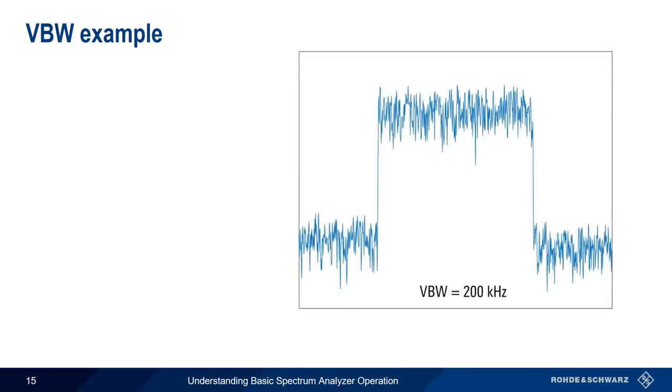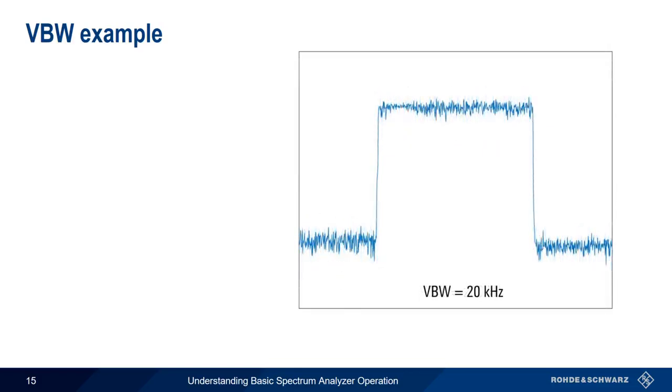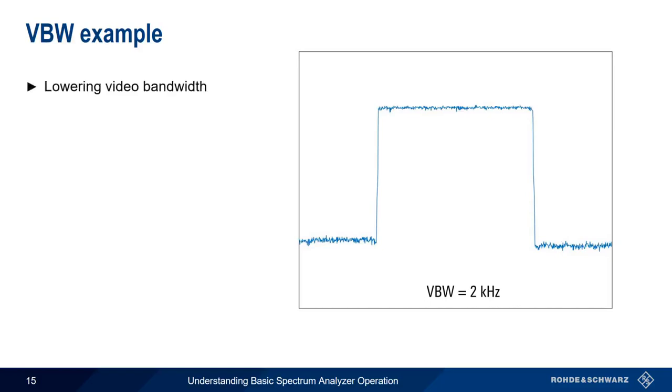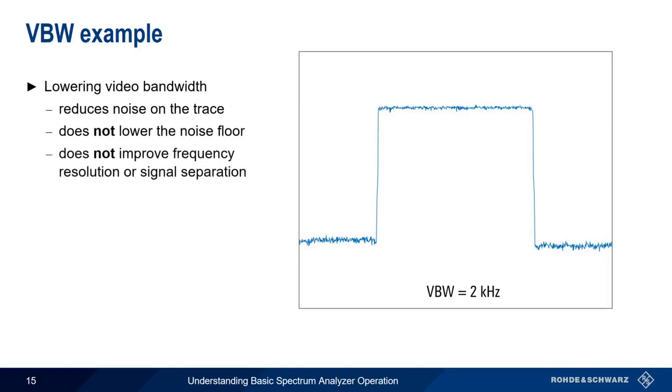Let's take a closer look at an example of what happens as we lower video bandwidth. At a video bandwidth of 200 kHz, we can see a fair amount of noise on our signal. This noise is reduced when we lower video bandwidth to 20 kHz, and decreases even further when video bandwidth is lowered to only 2 kHz. Lowering the video bandwidth only reduces the noise on the trace. It doesn't drop the noise floor like resolution bandwidth, and it also doesn't improve our ability to resolve or separate closely spaced signals.